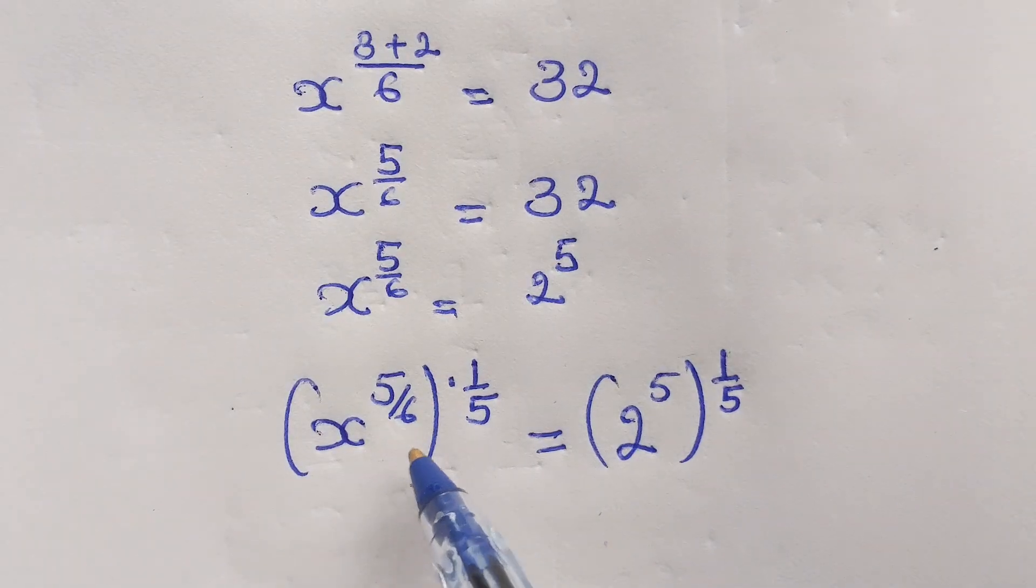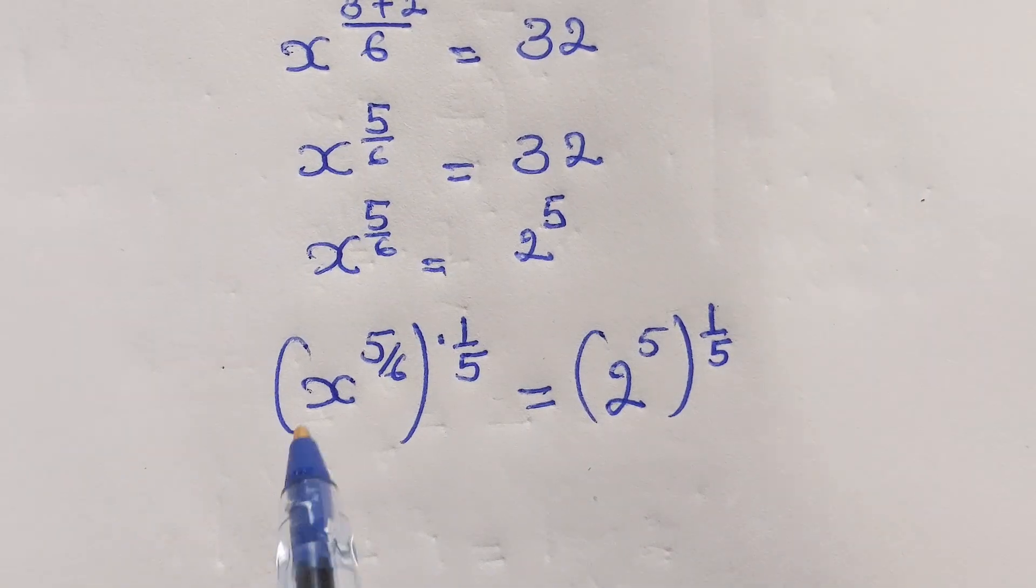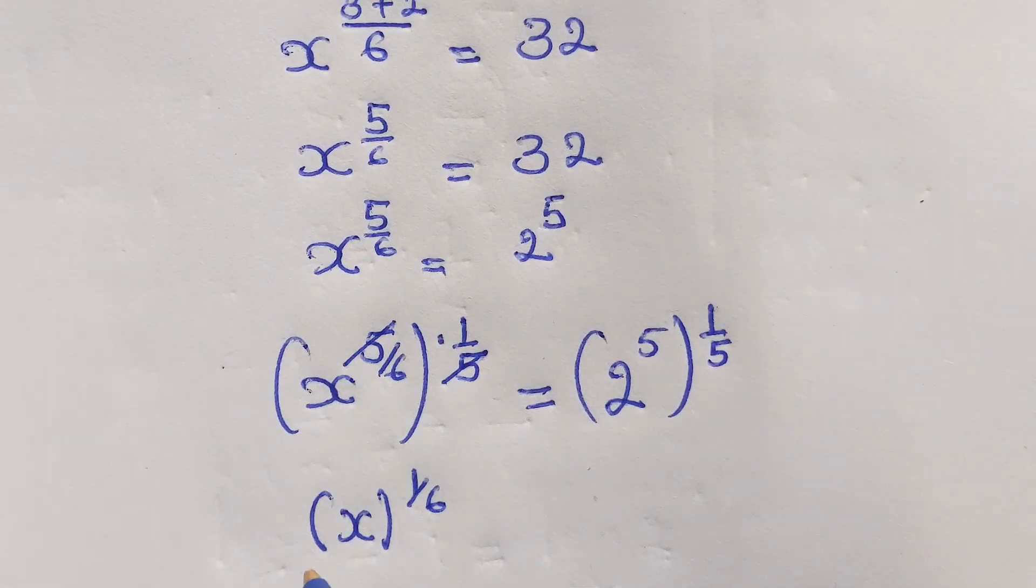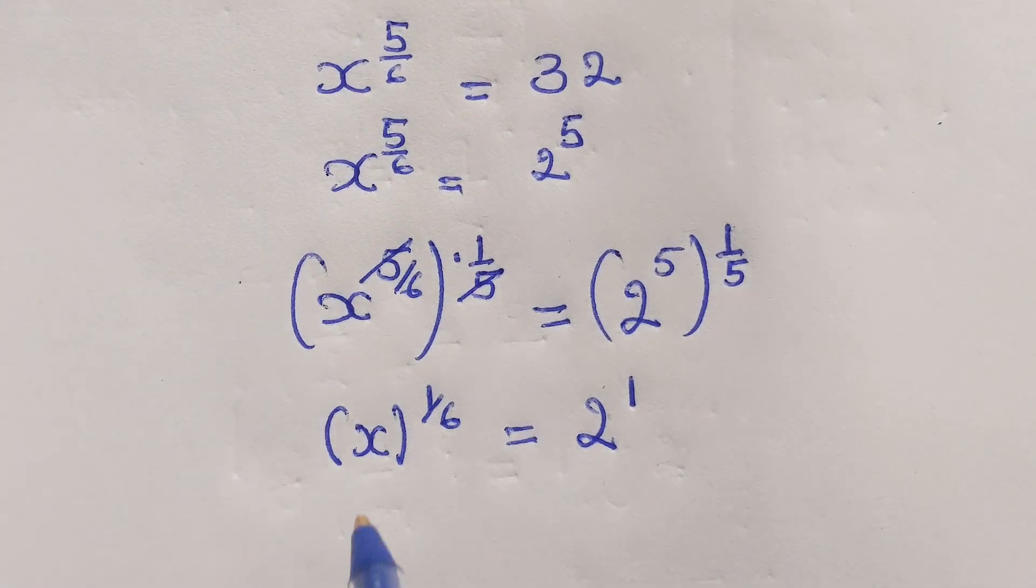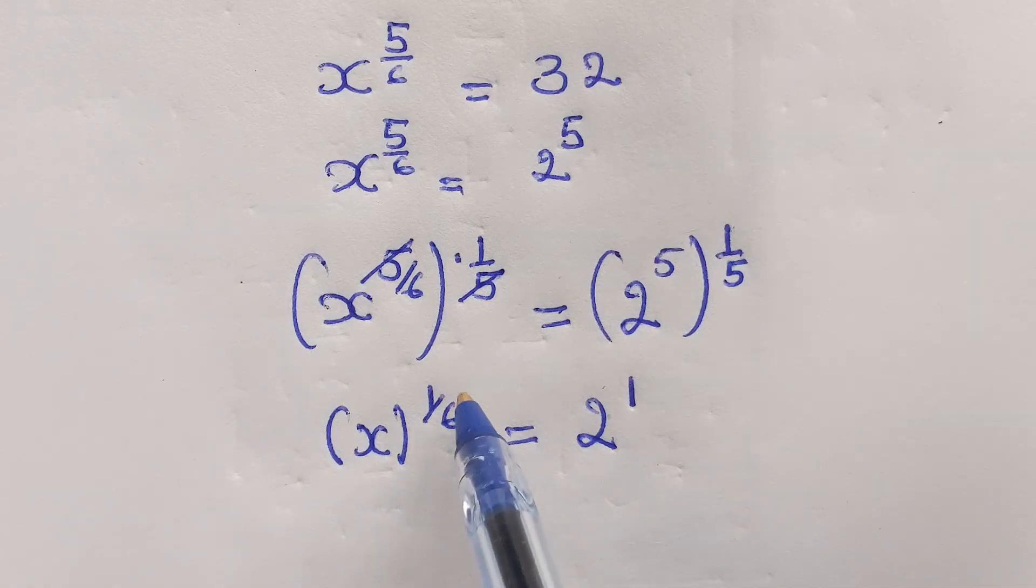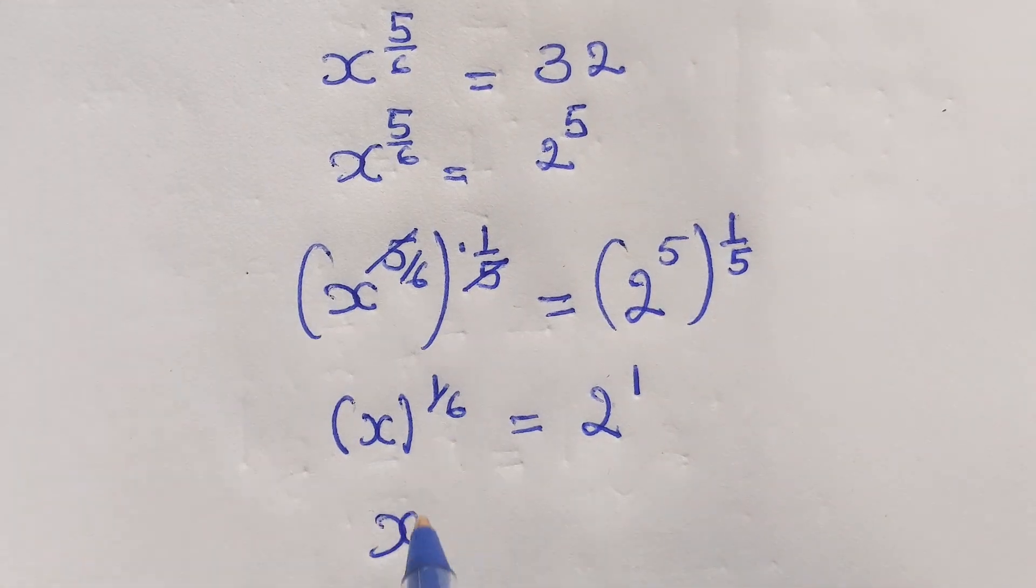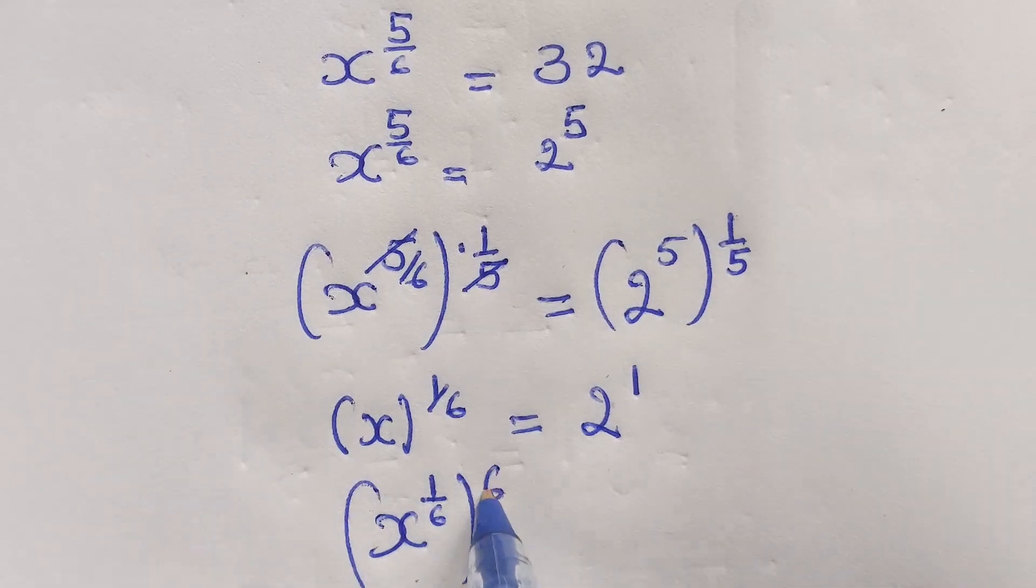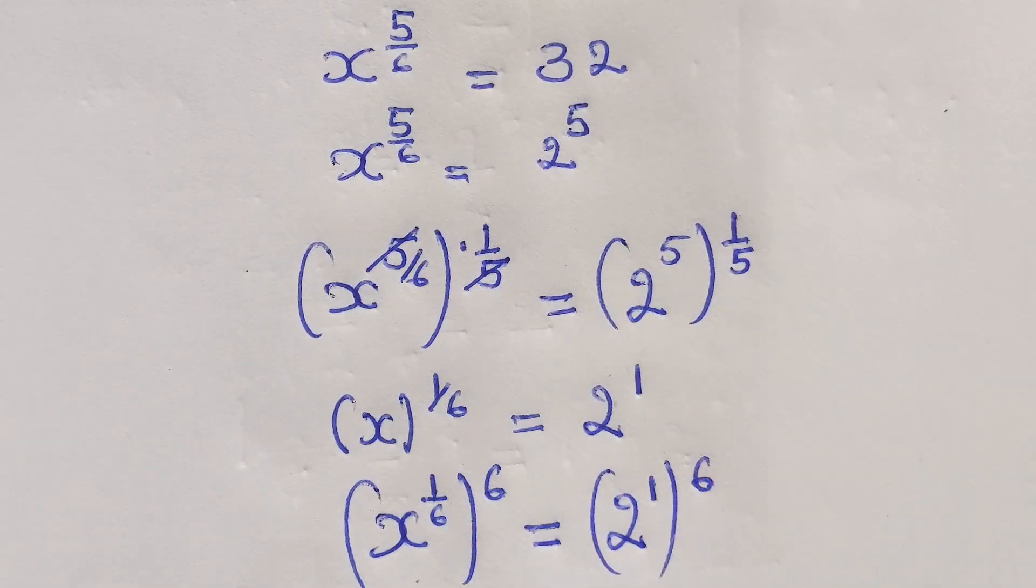What we do on one side, we have to do it on another side. And here, of course, we shall get x power 1 over 6 due to this 5 will be simplified to get 2 power 1. And at this stage, we are going to multiply 6 on both sides. To get x power 1 over 6 times 6 equal to 2 power 1 times 6.